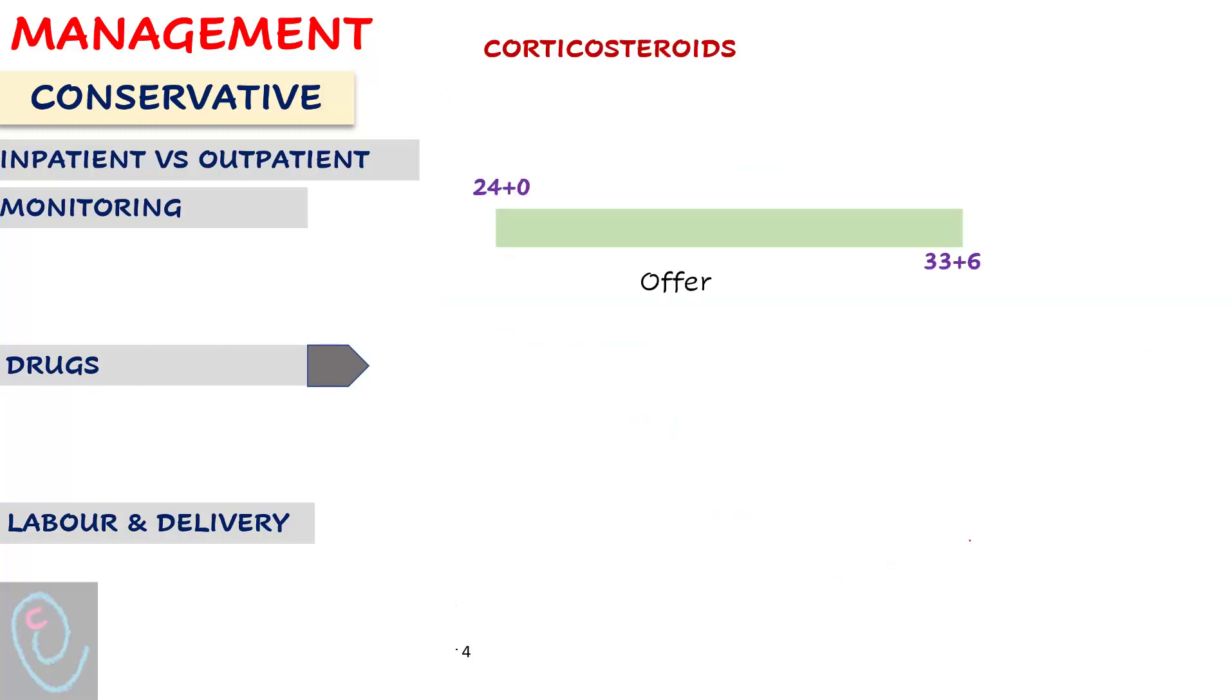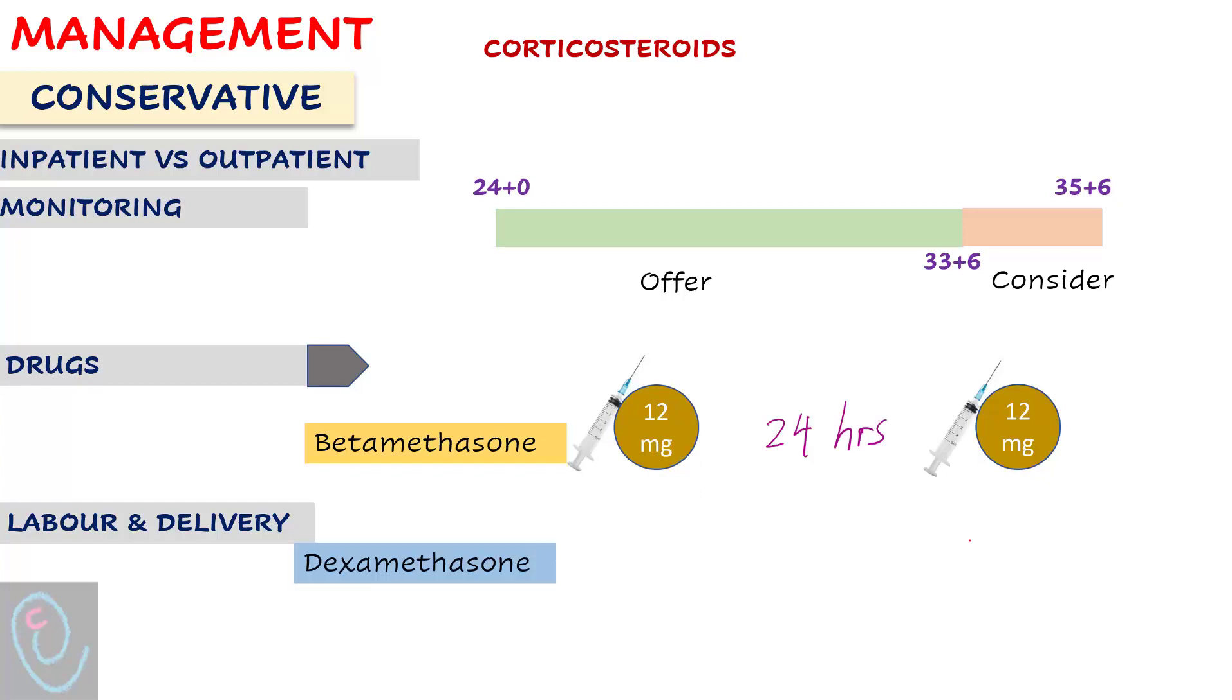Offer corticosteroids between 24 and 34 weeks and consider them between 34 and 36 weeks. Either 2 doses of betamethasone 12 mg intramuscular 24 hours apart, or 4 doses of dexamethasone 6 mg intramuscular 12 hours apart.